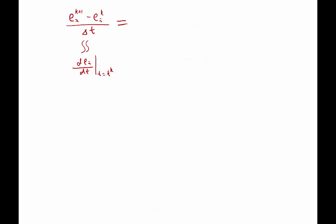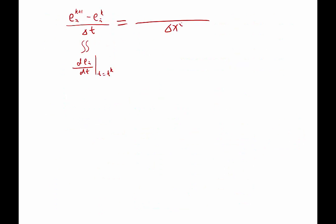Let's write down the numerical solution. E^(k+1)_i equals (E^k_(i+1) plus E^k_(i-1) minus 2E^k_i) over delta x plus tau_i. If you look at this equation, there is a condition for which the solution would not self-amplify. The condition is delta t has to be less than delta x square.